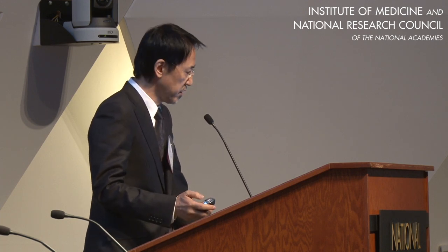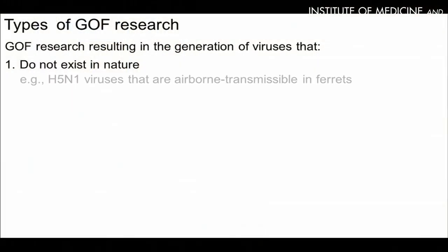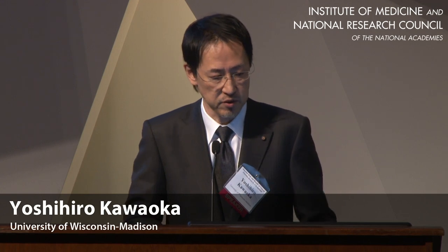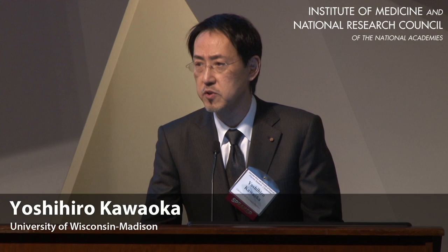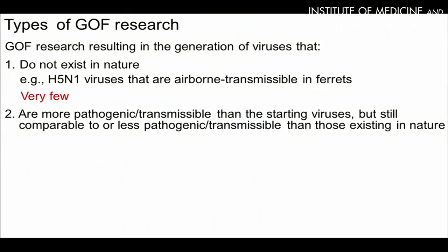I'm going to review types of gain-of-function research that we've been discussing in the previous session. I think there are three types. First, gain-of-function research resulting in the generation of viruses that do not exist in nature — for example, H5N1 viruses that are airborne transmissible in ferrets. This type of research is very few.